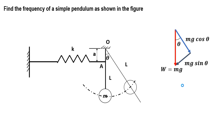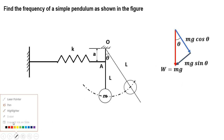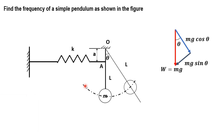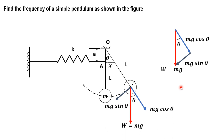As you can see over here, we have displaced the mass in this particular direction. The mass is displaced from its mean equilibrium position up to this particular point. So w is equal to mg, which will act vertically in the downward direction, and it will have two components: mg cosθ and mg sinθ.